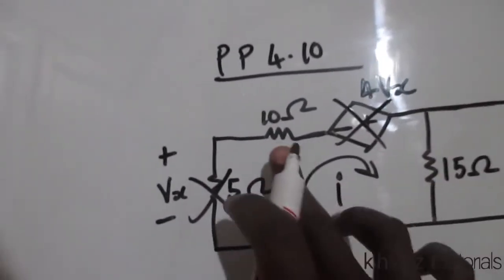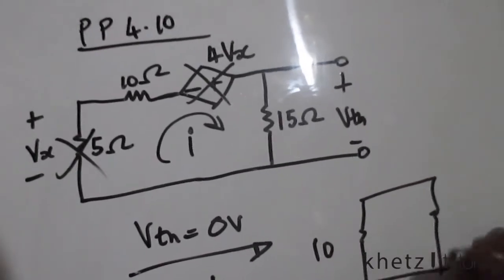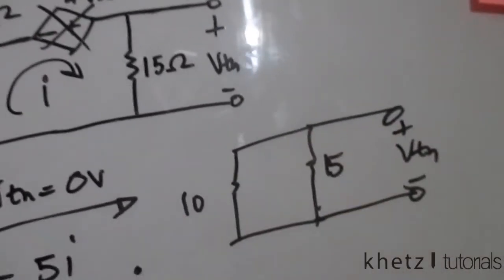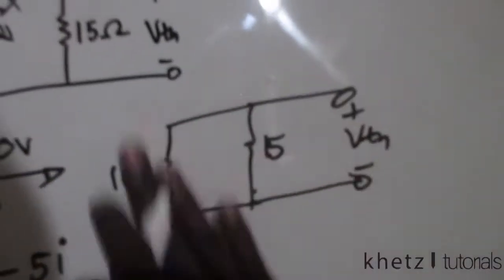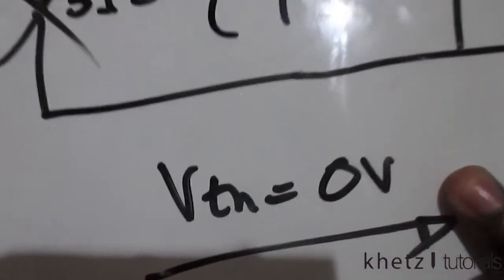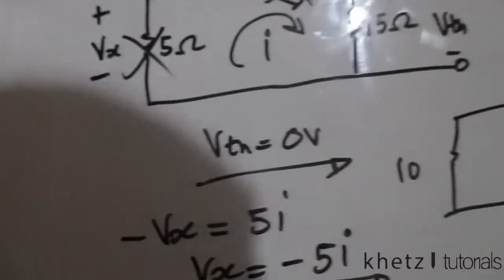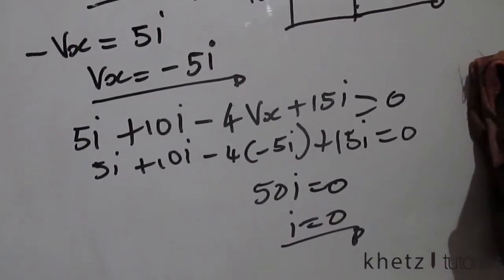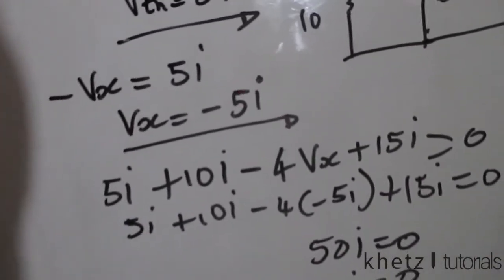Now that i equals 0, the dependent source terms fall away and you're only left with two resistors in parallel. Since resistors can't supply power — they only dissipate — the voltage across them is zero. So if a circuit has no independent sources, Vth is zero; there's no excitation. You can also prove this quickly using math.